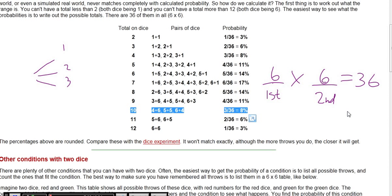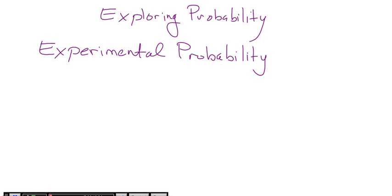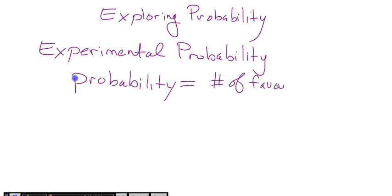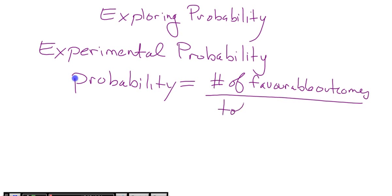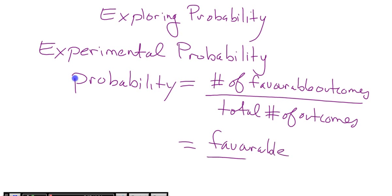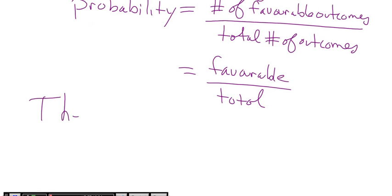So experimentally, we threw them. In experimental probability, the probability is defined as the number of favorable outcomes over the total number of outcomes — favorable over total. So talking about a die: what's the probability of getting a two? There's one two out of six faces, so the probability is one out of six. That type of probability, where we look at that chart of dice, is called theoretical probability.